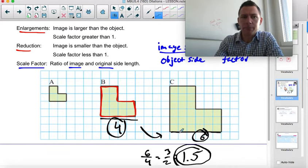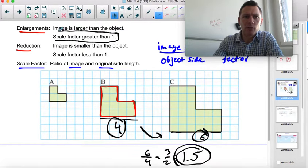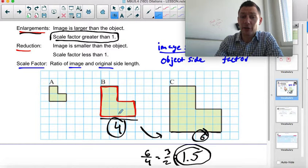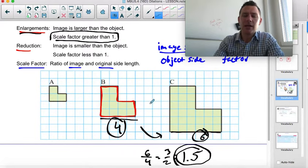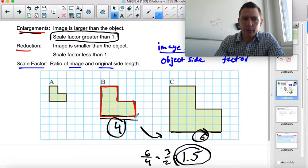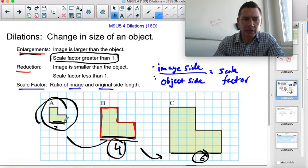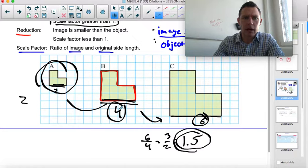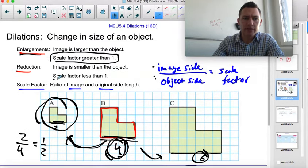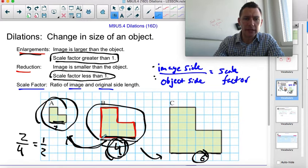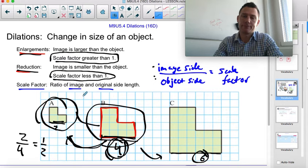This is bigger than 1, which means if your scale factor is bigger than 1, it means you have an enlargement. If your scale factor is 1, it stays the same size. On the other hand, if you go from here to here, this length is 4, this length is 2, this is our new image. So we'd go image over object. Image length is 2, object length is 4. This gives you a scale factor of a half. So this side, 4 is getting half as big, 2. Scale factor is less than 1, so B is getting smaller. This is a reduction.